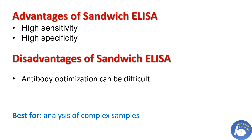Advantages of sandwich ELISA: it is highly sensitive because it is 2 to 5 times more sensitive than direct or indirect ELISA. It is highly specific because two antibodies — primary antibody and secondary antibody — are both involved in the detection process. The disadvantage of sandwich ELISA is that antibody optimization can be difficult because cross-reactivity between primary antibody and secondary antibody can occur. This ELISA is best for analysis of complex samples since the antigen does not need to be purified prior to measurement.